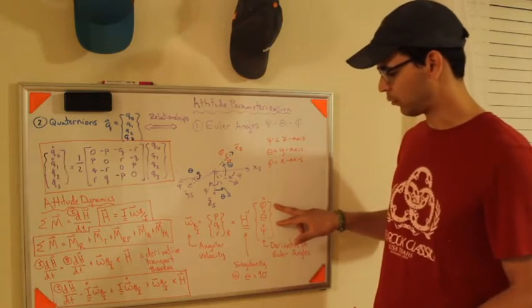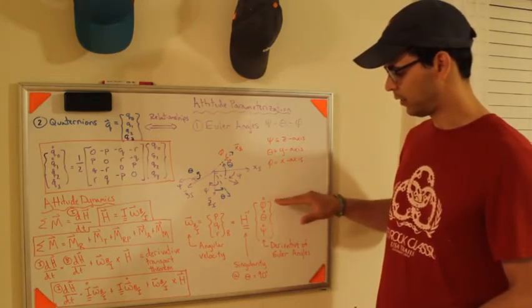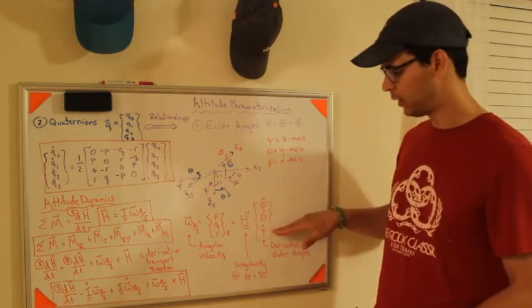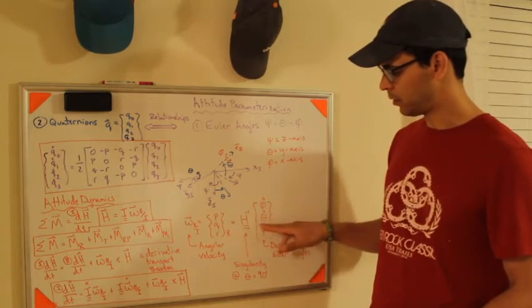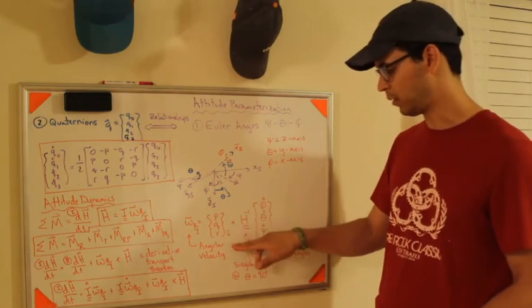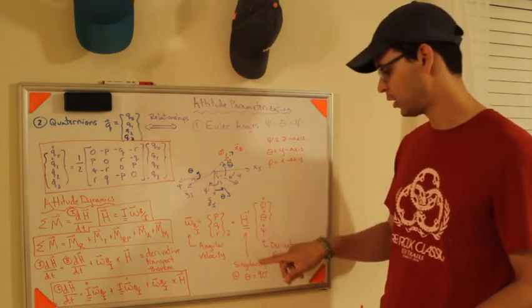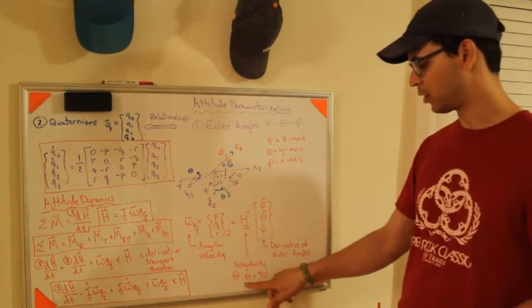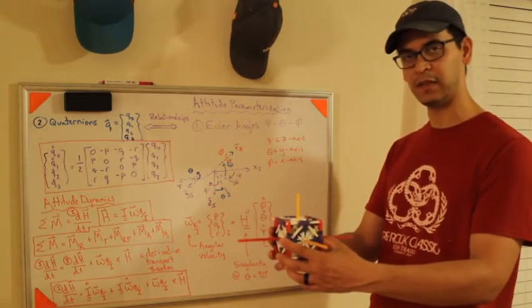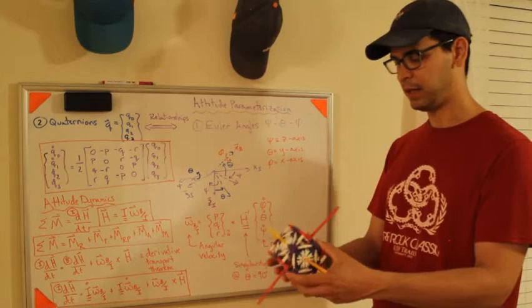If you try and create a relationship between phi dot, theta dot, and psi dot, the derivative of roll, derivative of pitch, derivative of yaw, and create some matrix inverse to get you to p, q, and r, which is in the body frame, you're going to get this aircraft notation used as a matrix called h. What's going to happen is, is that you're going to find a point where if theta is equal to 90 degrees, this inverse breaks down. And let me show you why.